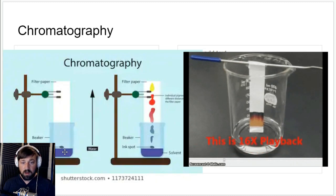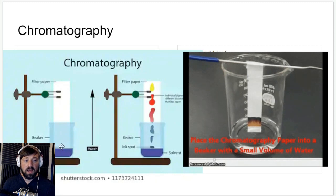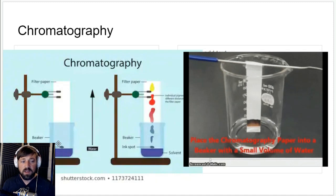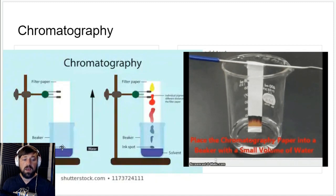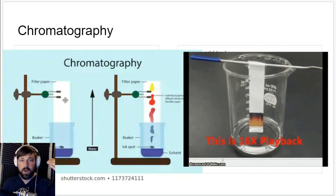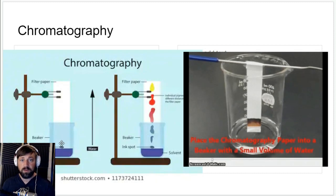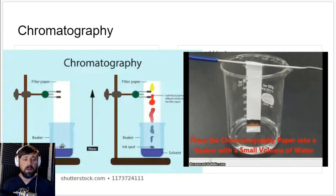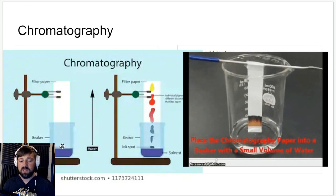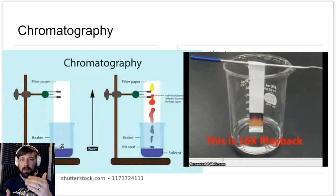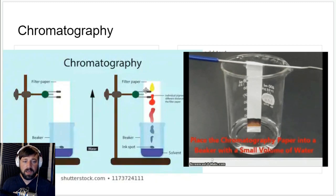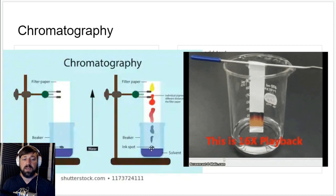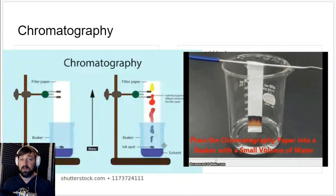So a solvent is going to dissolve some of the substances in the ink spot. And as the solvent raises up through the paper using capillary action, the substances that dissolve from the ink spot are going to travel right up along with it, the water or whatever solvent you're using. And some of the substances don't dissolve very well. They take a little bit of time to dissolve. And so those guys are going to be a little bit later to the party. They're going to dissolve a little bit less. They're going to kind of lag behind. So that is how chromatography separates.